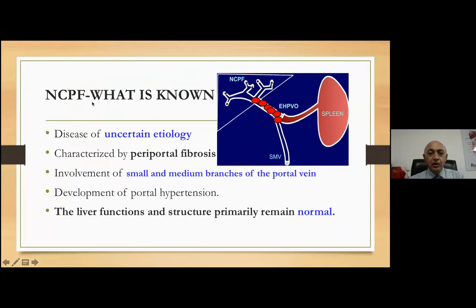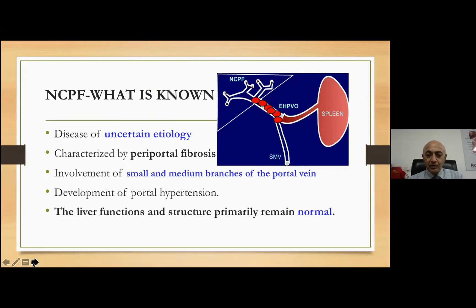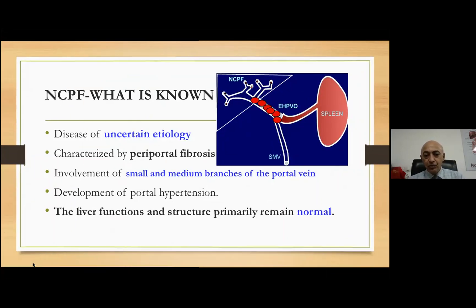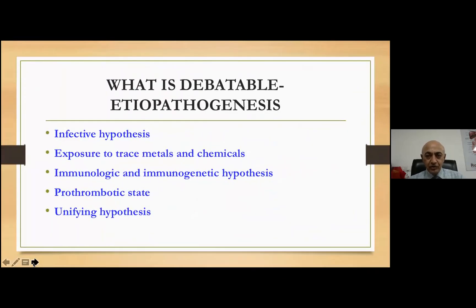Today's topic is non-cirrhotic portal fibrosis. What is definitely known about it is that it is a disease of uncertain etiology, characterized by periportal fibrosis, with involvement of the small and medium branches of the portal vein leading to portal hypertension. By default, liver function and structure tend to remain normal. It is an important lesson: in cases of preserved liver architecture and function, if you still have portal hypertension and variceal bleeding, think of NCPF as a cause.